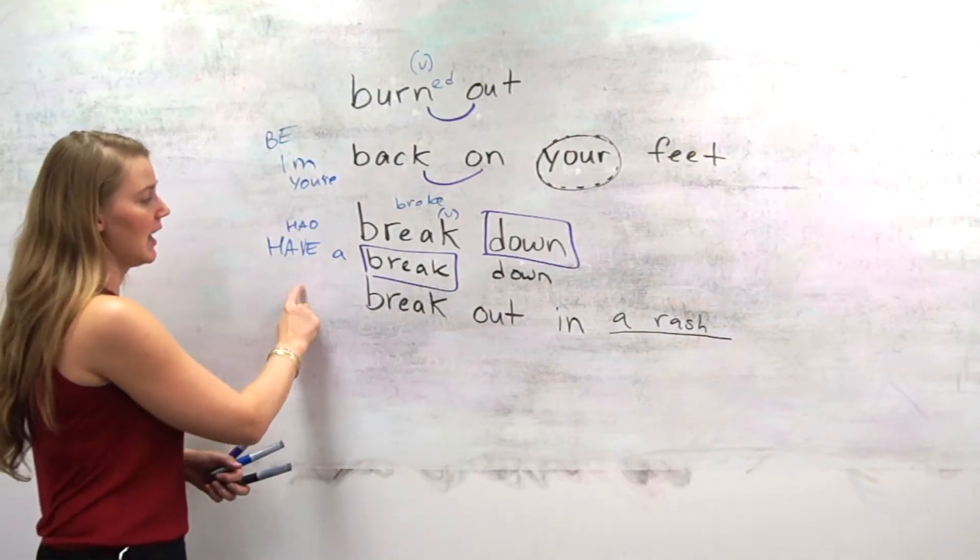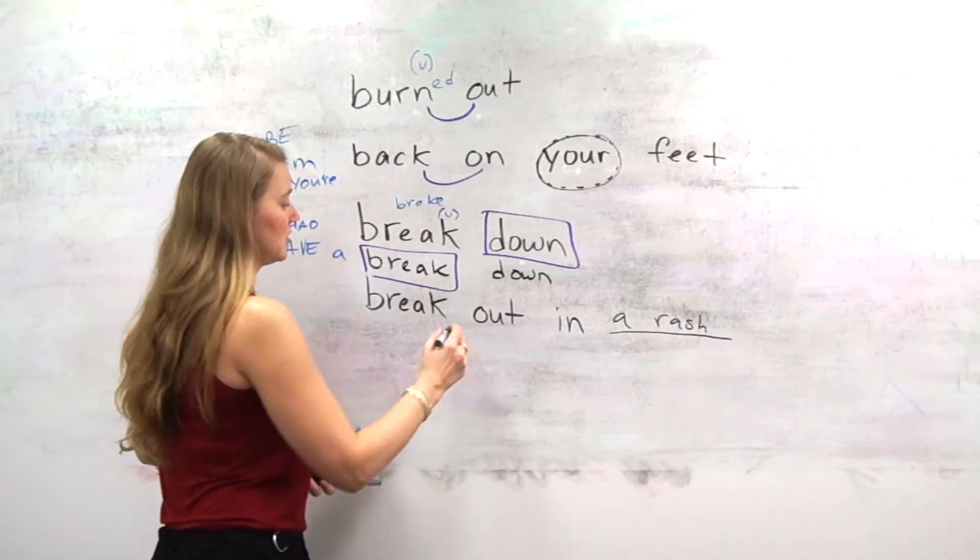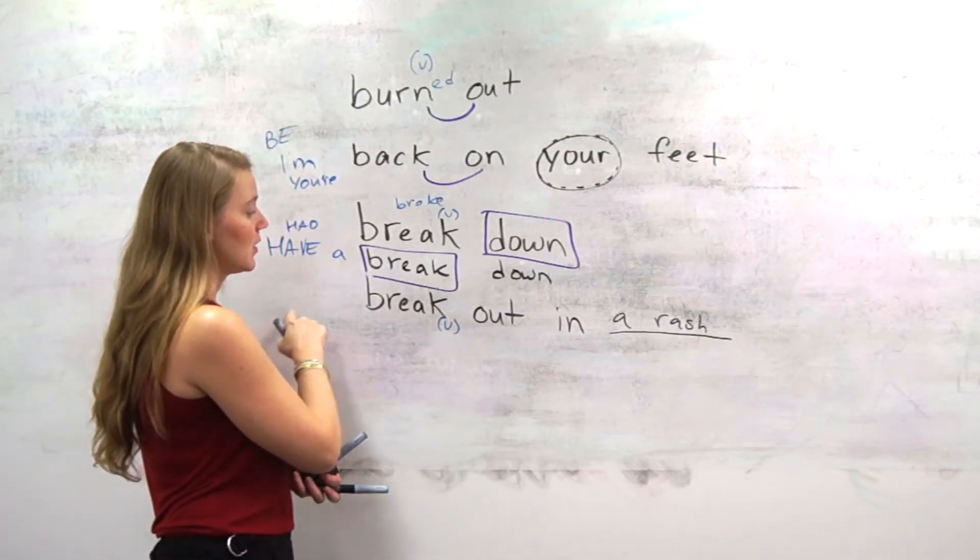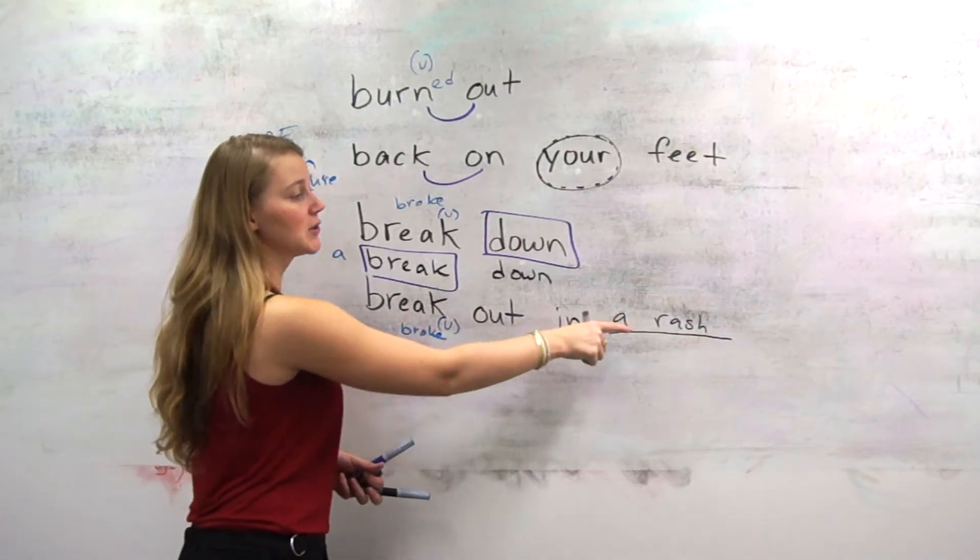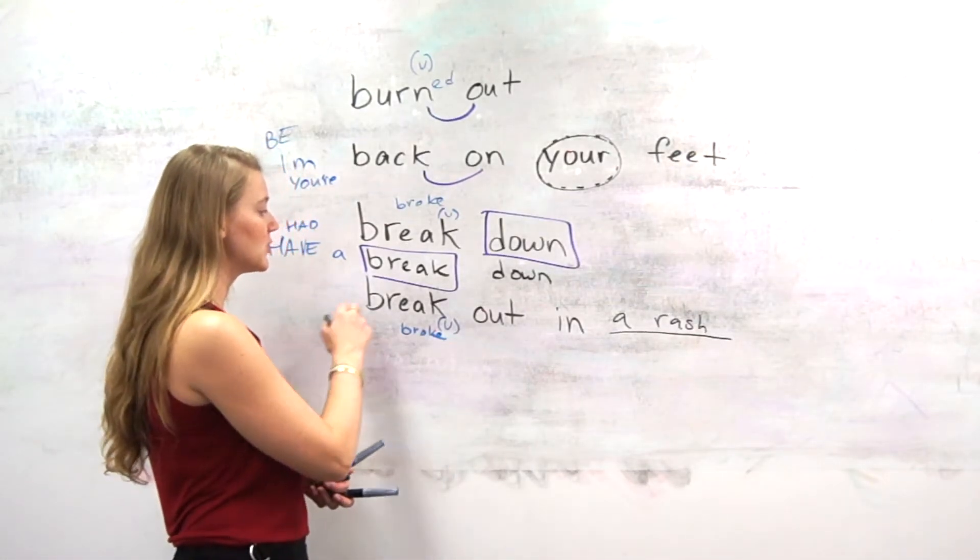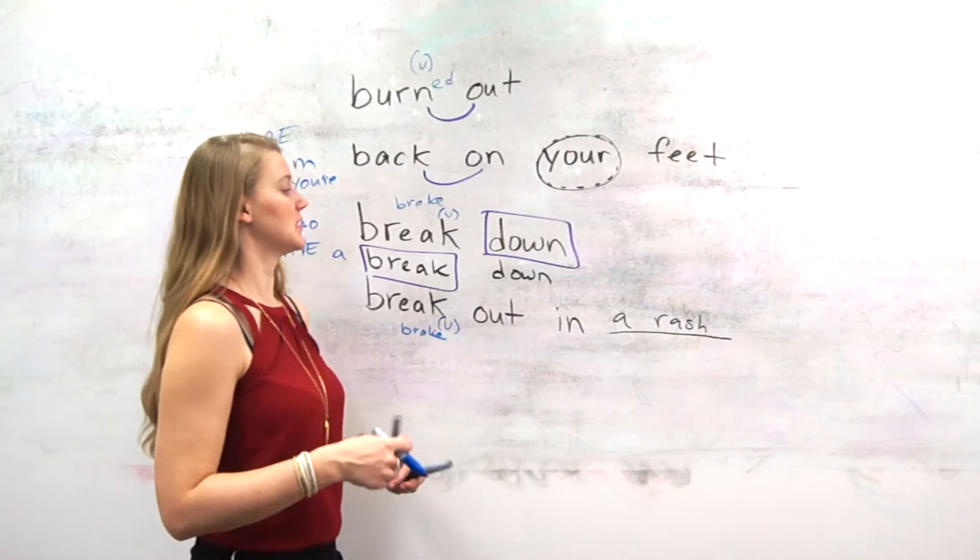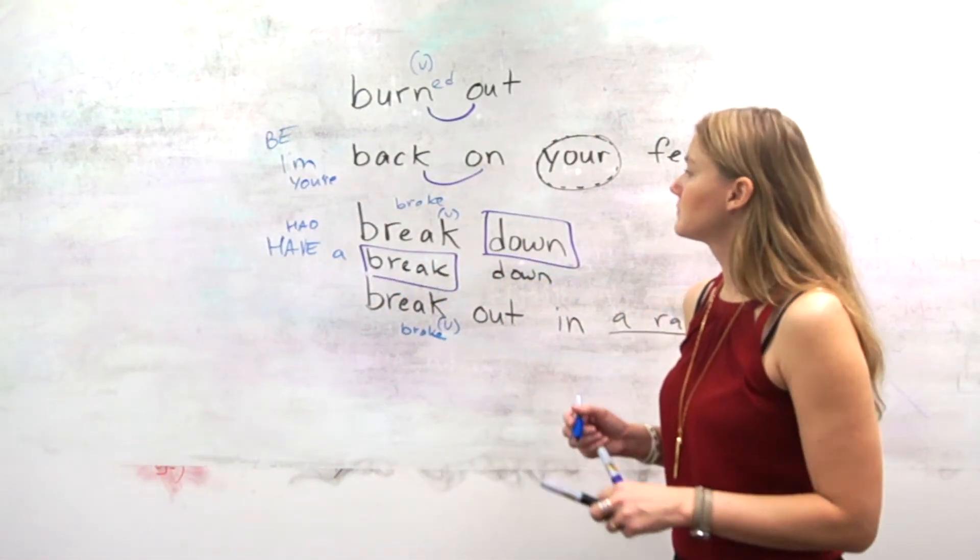And we would say, I, and this is the verb. So this changes depending on when it happened. So I broke out. I broke out in a rash yesterday. Or I hope I don't break out in a rash. Okay. If you know you have an allergy to something, you don't want to break out in a rash. Okay.